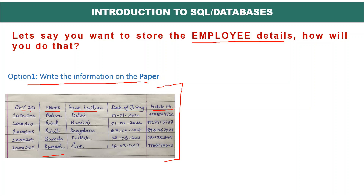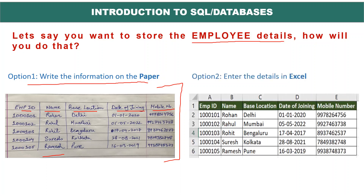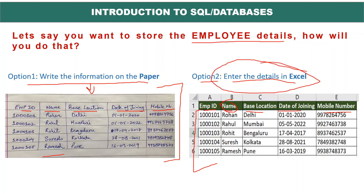This option is not used anymore and not viable, because there would be multiple records — so many people joining every day, possibly in thousands. Second option can be entering the details in Excel. You maintain records in Excel — employee ID, name, base location, date of joining, mobile number. The better part is you can filter; if you want to see how many employees named Rohan are there, you filter on the name column. But Excel has so many limitations.